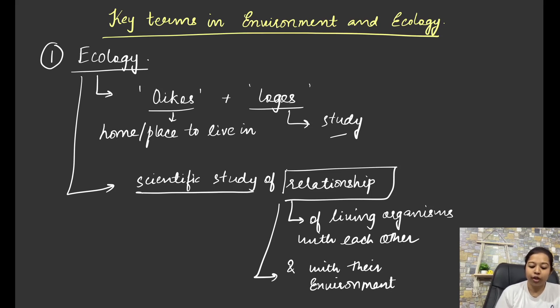Now relationship between whom? This has to be something, relationship between someone. So it is scientific study of relationship of living organisms with each other, and with their environment. You have to be very particular about it. Let's repeat. So ecology is derived from the two words Oikos and Logos. Oikos means the home or the place to live in. And Logos is study. So where you are living, you are studying about it. You will be getting the relationship of different living organisms with each other. And you will also get the relationship between the living organisms with their environment.